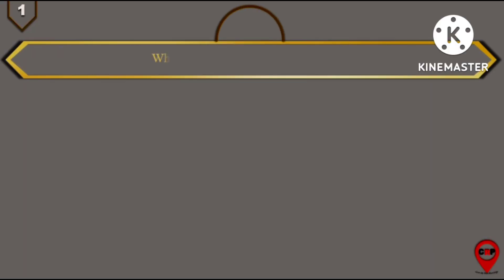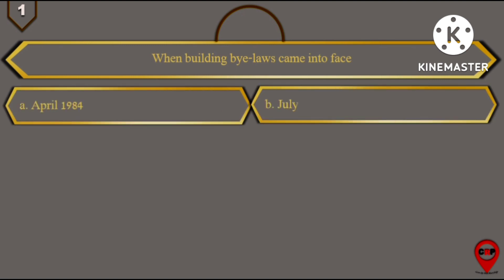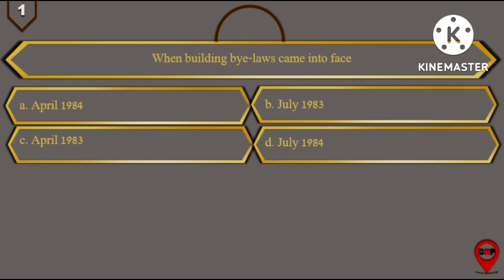So our first question is: When did building bylaws come into phase? Options are: April 1984, July 1983, April 1983, and July 1984. Here you have to choose one option among these four options.